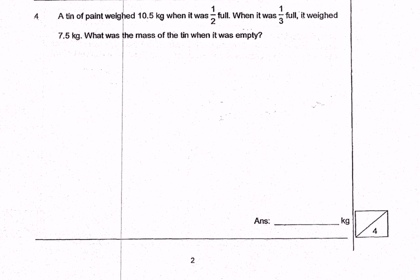So let's put it into statements and equations. I have a tin, when it's half filled, it is 10.5 kg. And then if it's one third filled, it would be 7.5 kg.